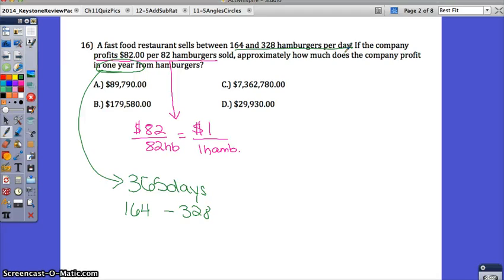If they sell 164 hamburgers per day, how much are they making off of each hamburger? They're making just $1. I could multiply it by the cost, but the cost here is 1, so that doesn't change anything. Then multiply it by how many days they're doing this for. They're selling this many hamburgers for a whole year, 365 days. Use your calculator. Find how much profit that would be.